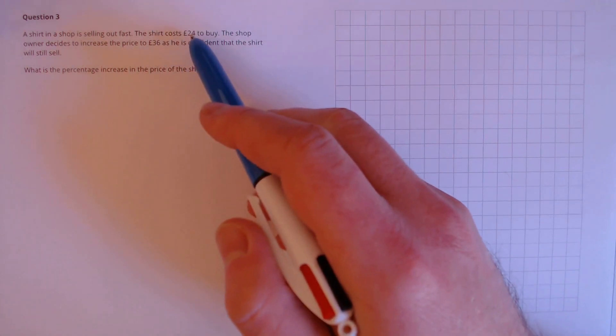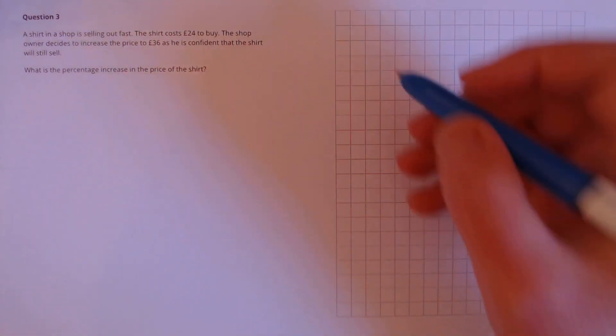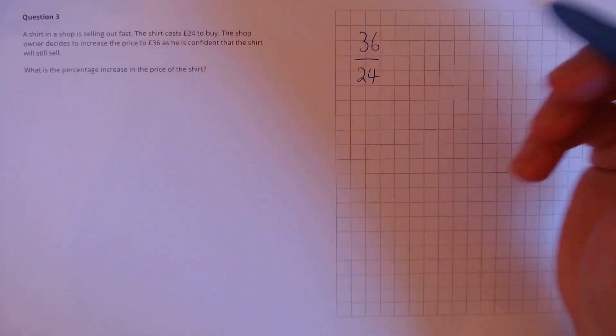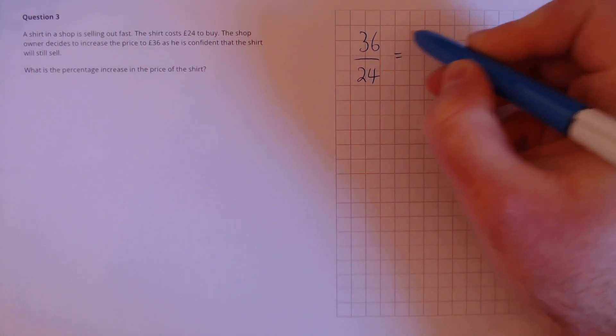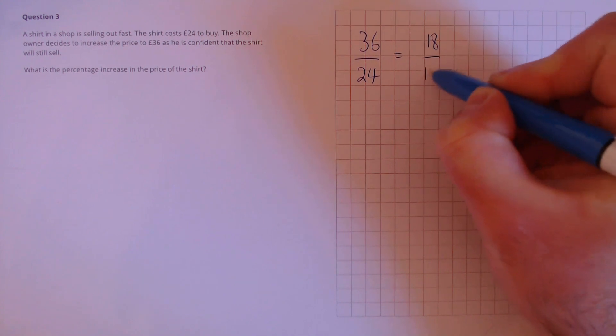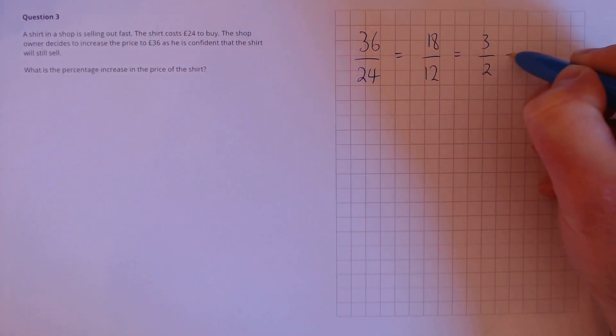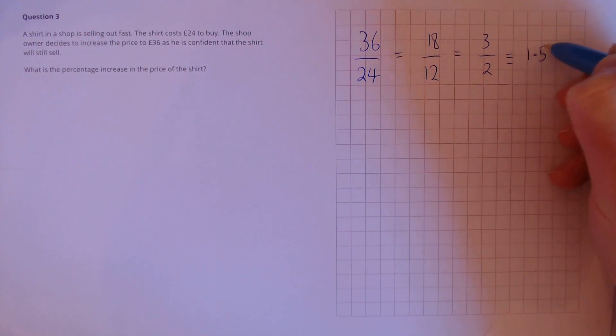To calculate the percentage increase we need to find out the multiplier. That's the number that 24 is multiplied by to make 36. To do that we divide 36 by 24. Let's cancel that down. So we get 18 over 12, which again simplifies down to 3 over 2, which is equivalent to 1.5. That's the multiplier.